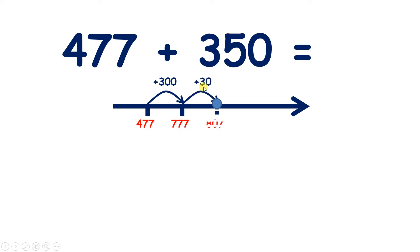If we add 3 tens, that takes us to our next 100, takes us to 807. So now how many more tens do we need to add? We've added 3 tens and we need to add 5, so we need 2 more tens, which takes us to 827. So we've added 5 tens altogether, and our answer is 827.